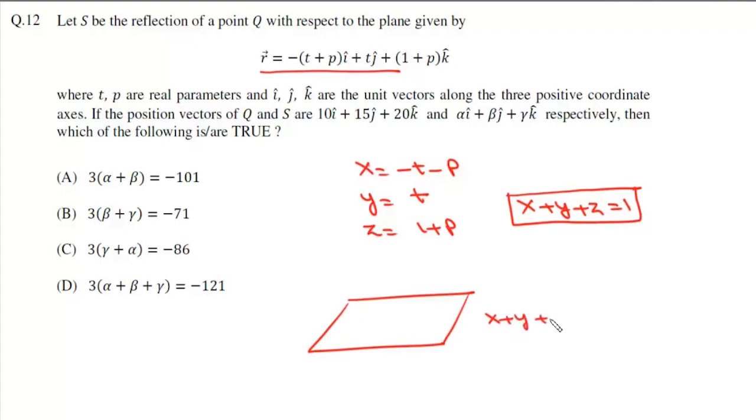Now coordinates of Q are 10, 15 and 20. And reflection of Q is S which is α, β and γ. Now we'll use formula for image of a point.